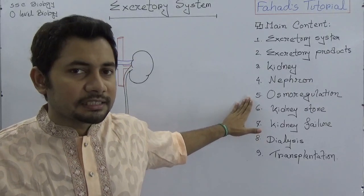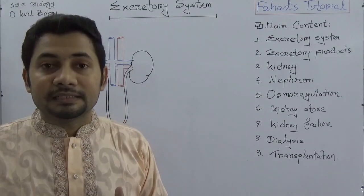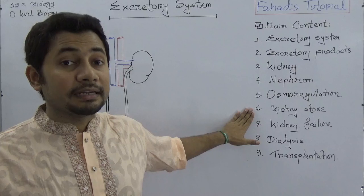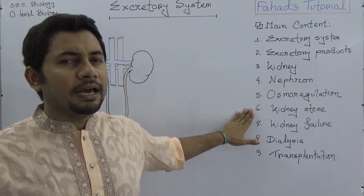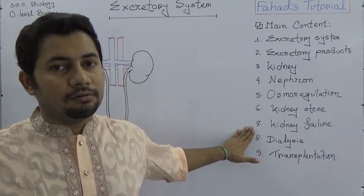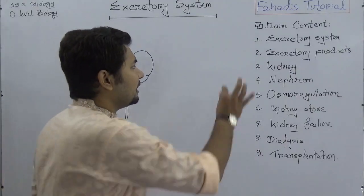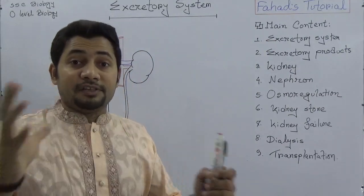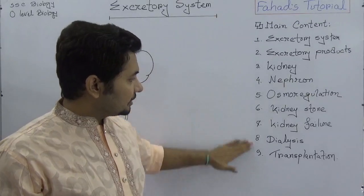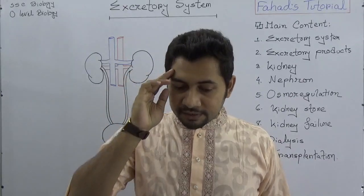We need to know about osmoregulation — how our body regulates osmotic pressure and water balance. Then there's the pathological condition of kidney stones or renal stones: how they form and what precautions to take. Number seven is kidney failure or renal failure — we need to know about dialysis and transplantation. Each and every single topic is itself a chapter, so I will maintain the level as explained in your book.